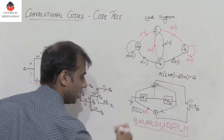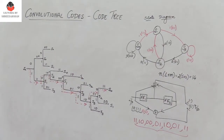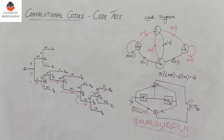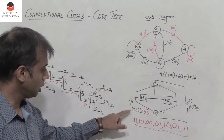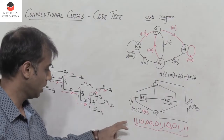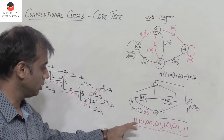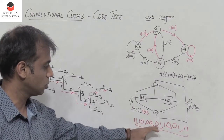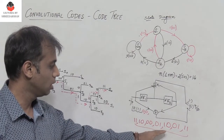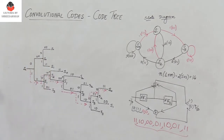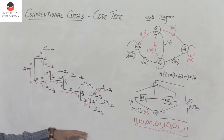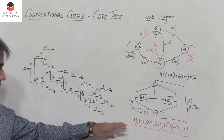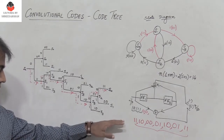The final output of the convolutional encoder for input 10111 is: 11 10 00 01 10 01 11. This gives 14 bits as expected, and we observe that this output is correct.